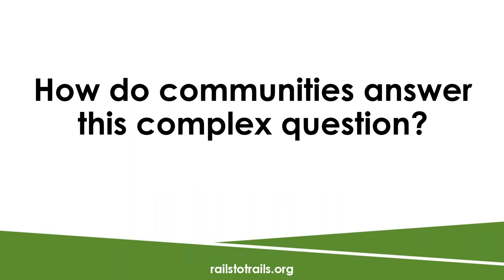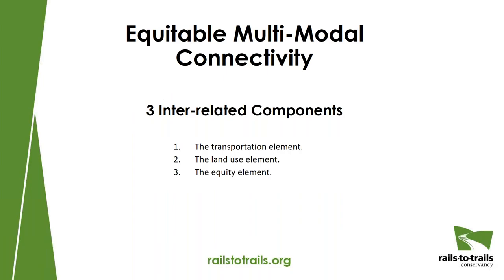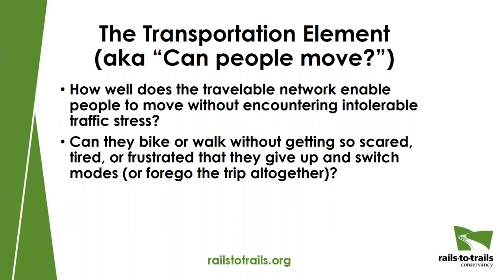So how do communities answer this complex question? It's really these three interrelated components: the transportation element, the land use, and the equity element. The transportation element is simply, can people move? Are the roads, the trails, the sidewalks, the bike lanes sufficient in quantity and quality that people can get where they need to go? It's about the roads themselves.